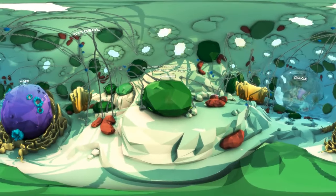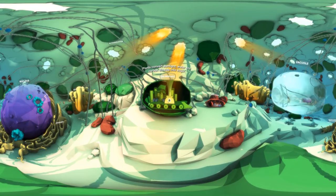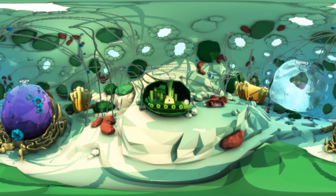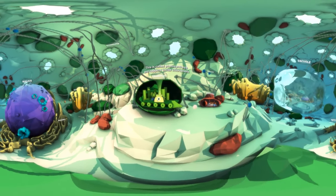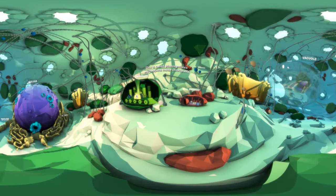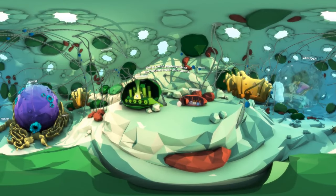Plant cells collect sunlight and use it to convert water and carbon dioxide into sugar. This process is called photosynthesis. Photosynthesis happens inside the many green chloroplasts found around a plant cell.